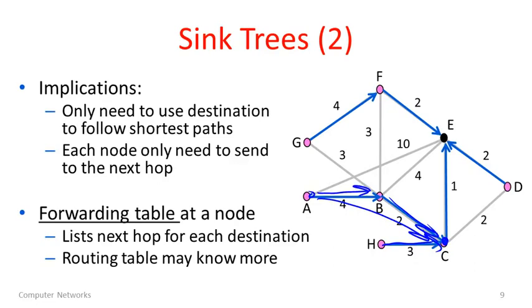This leads to a notion of a forwarding table for a node. We saw that we assumed that there were forwarding tables to do IP forwarding. At a node, the forwarding table is going to list the next hop for every single destination. So that's going to allow us to forward a packet, because we'll know the direction to send it in by simply looking at the destination.